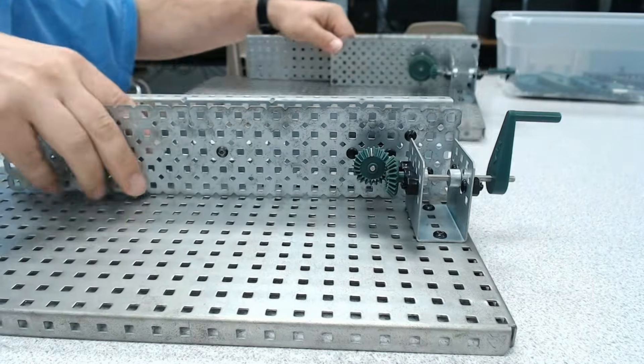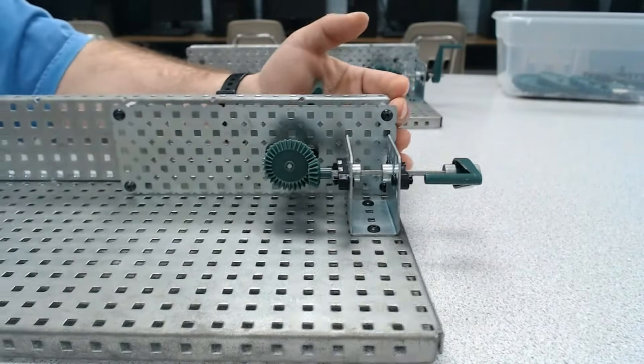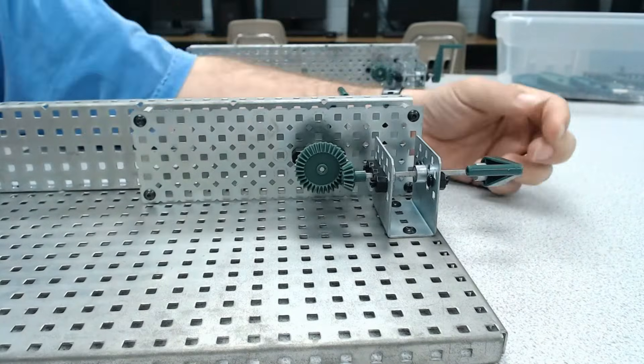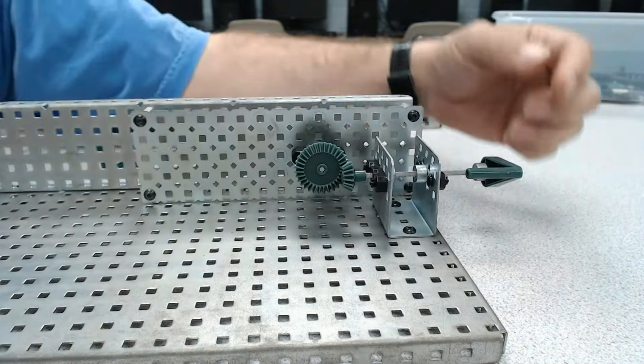But what if we use a bevel gear in which the gears are two different sizes? Say a bevel gear that looks like this. In this one, we have a 32-tooth gear and we have a 16-tooth gear. So in this one, what would be our gear ratio?